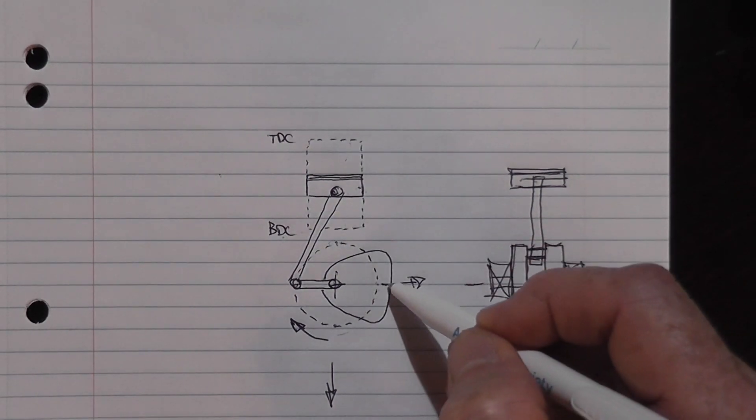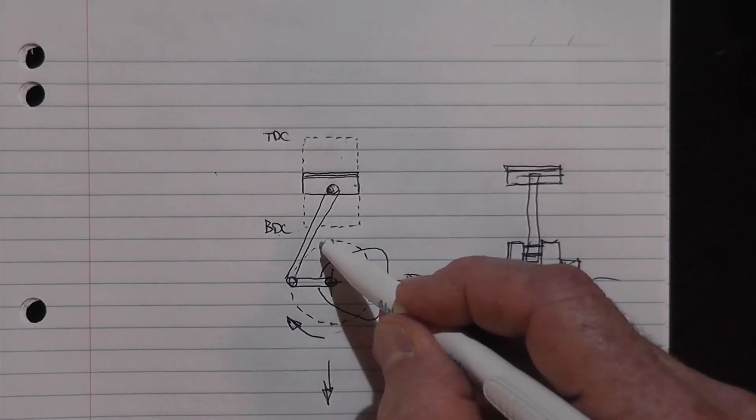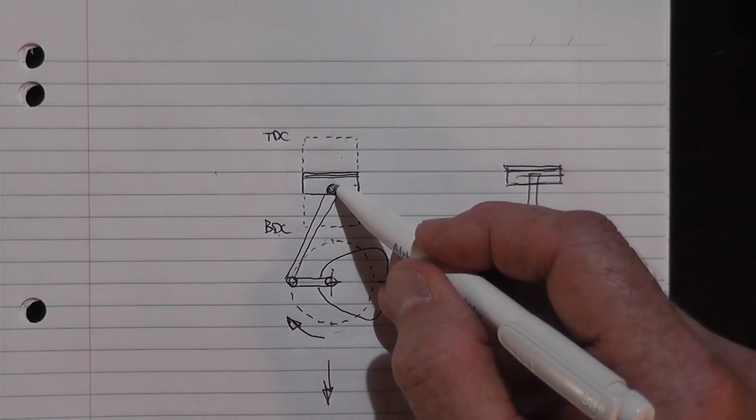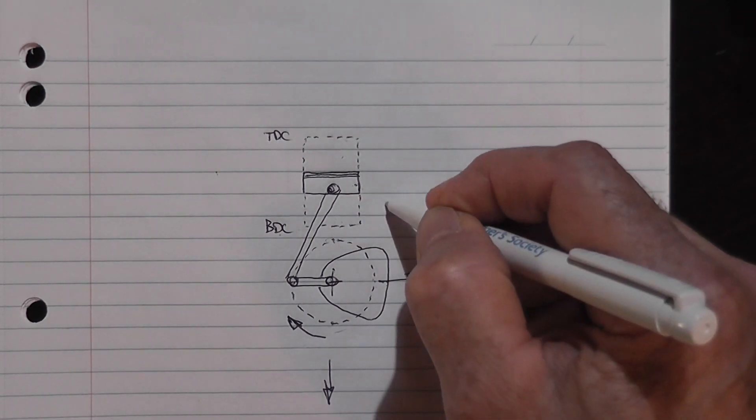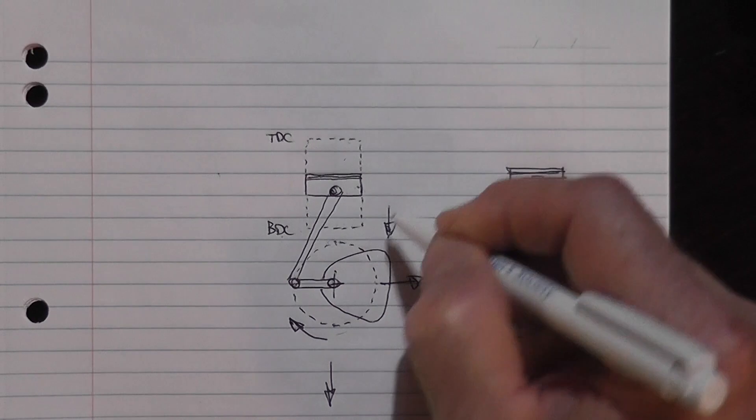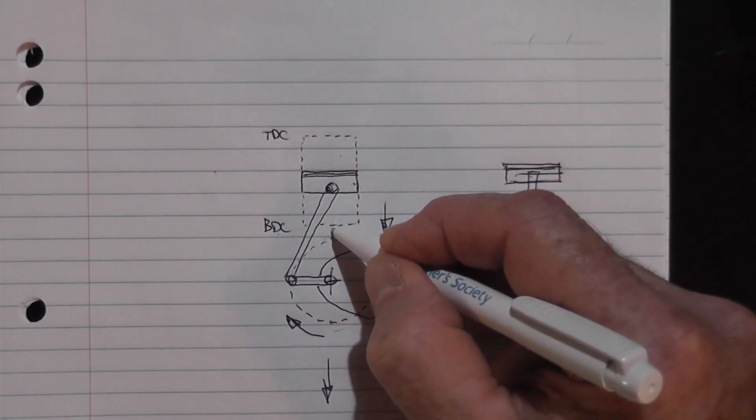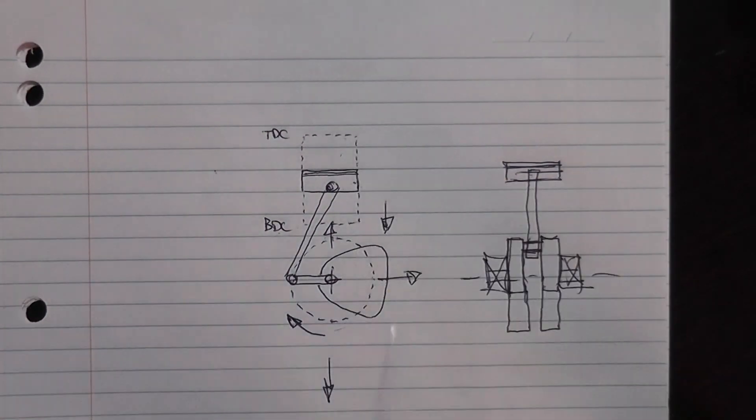And then when this gets to the top, the piston would be at the bottom. So the piston would be creating a force like that and this force would be up here like that. So it balances out in this direction.